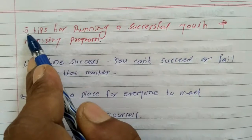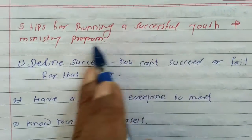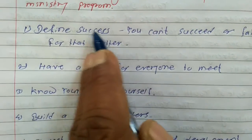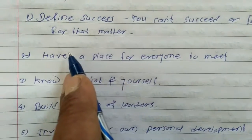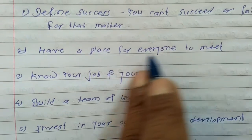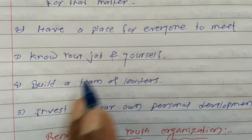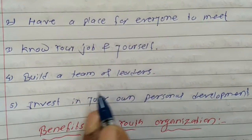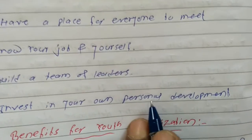The next point is 5 tips for running a successful youth ministry program. 1. Define success — you can't succeed or fail without defining it. 2. Have a place for everyone to meet. 3. Know your job and yourself. 4. Build a team of leaders. 5. Invest in your own personal development.